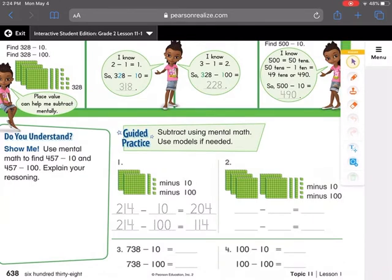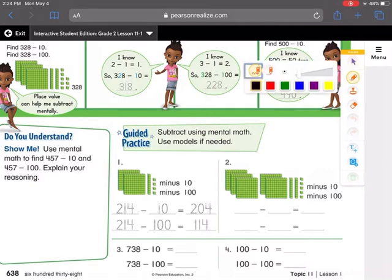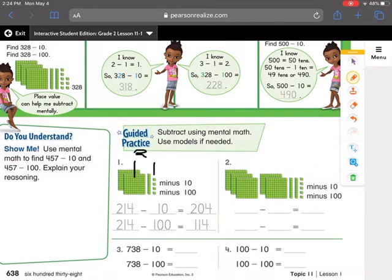And in number 1, it looks like we have 214. Right? That's what the place value blocks tell us. That's two hundreds, one 10, and four ones.